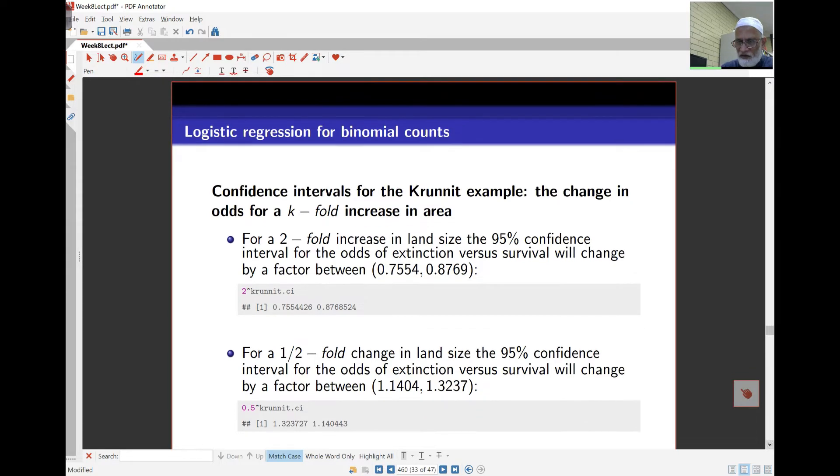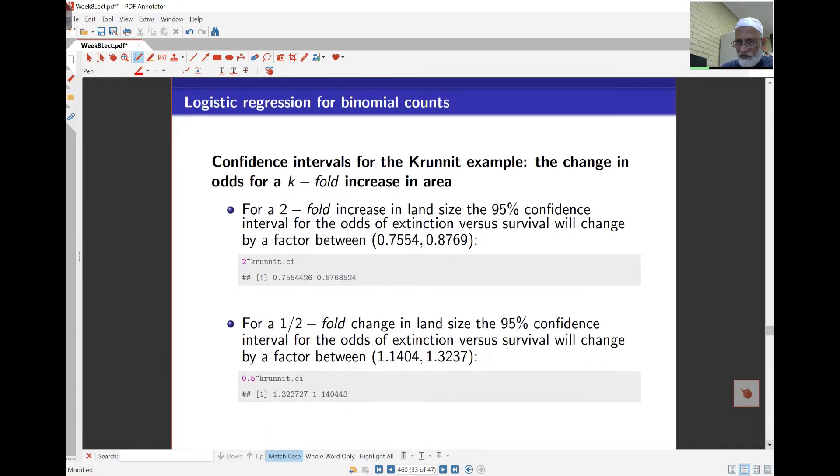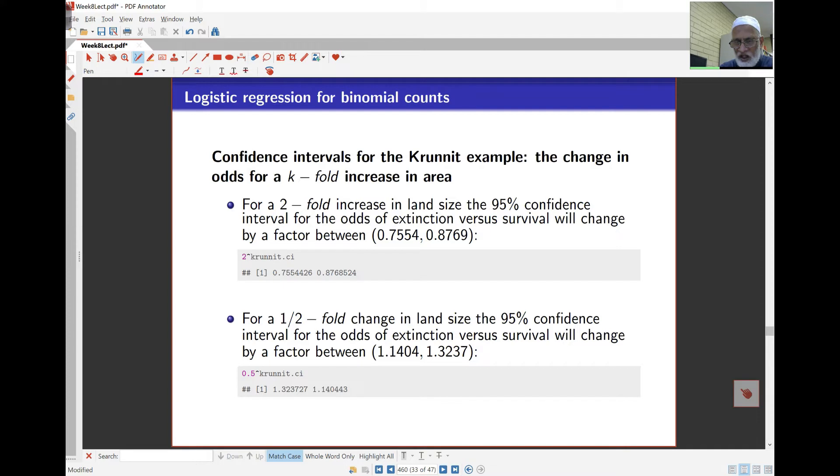If I go the other way around, then I take it as 0.5 to the power. If I halve the area, it's 0.5 to the power, and I can see now that the odds of extinction have actually increased 1.14 to 1.32. You can see how because this is 0.5 to the power, the actual interval is reversed in direction, so I need to write this as 1.14 to 1.32.